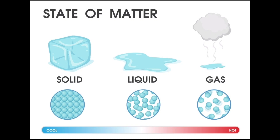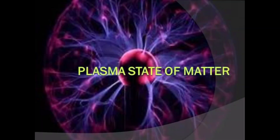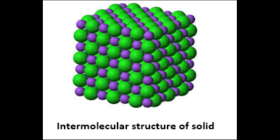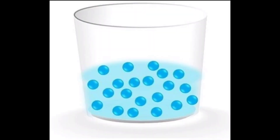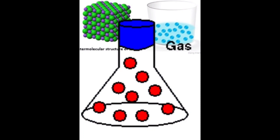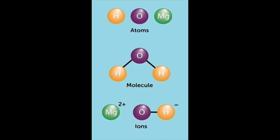Now, what will happen if even more heat is given to the gas? If more heat is given to the gas, a new state will be formed — the fourth state of matter, called plasma. In solids, particles are very closely packed. As heat is applied, bonding loosens to form liquid, and more heat breaks bonding further to form gas. But what happens when gas is heated even further to form plasma?